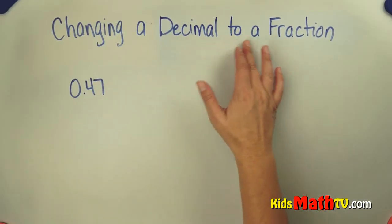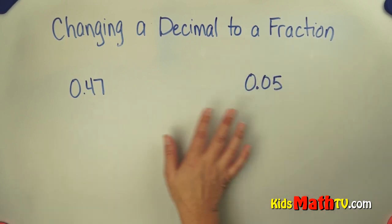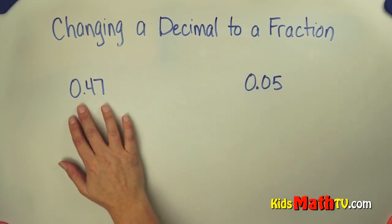In this lesson, we'll be changing a decimal to a fraction. So here we have two different decimals, we'll start with 0.47, or 47 hundredths.